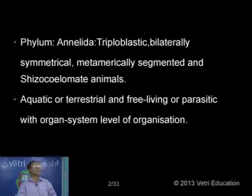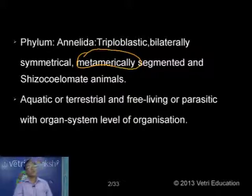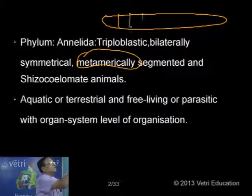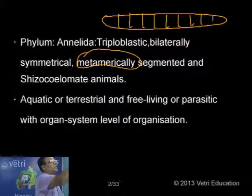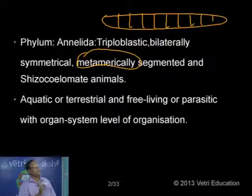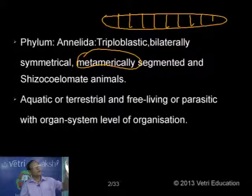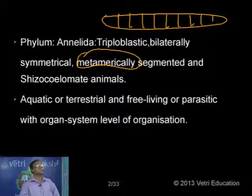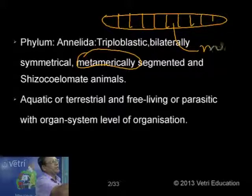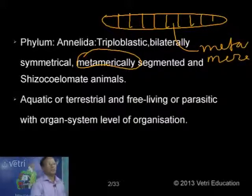We have two types under true coelomate — triploblastic and bilaterally symmetrical — with metameric segmentation. What do I mean by metamerism? The linear division of the body. Suppose you are taking the earthworm — the body is divided into many segments, a linear division of the body. And all the segments are alike, and each segment has a representative part of all the systems. That condition is called metameric, and each segment is called a metamera.